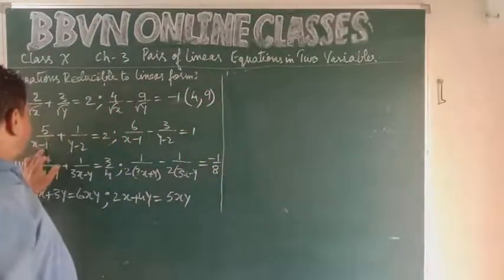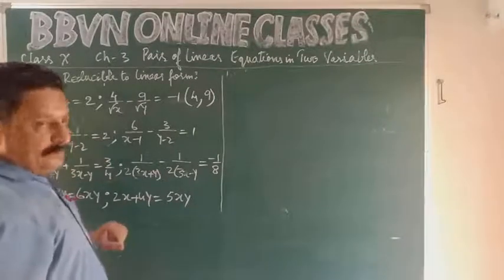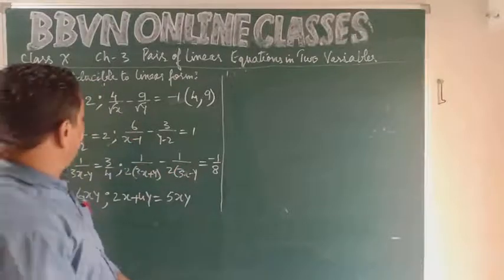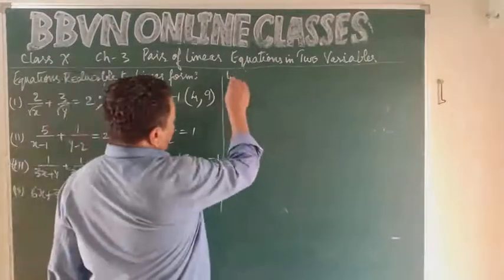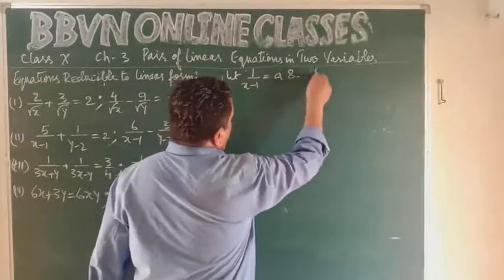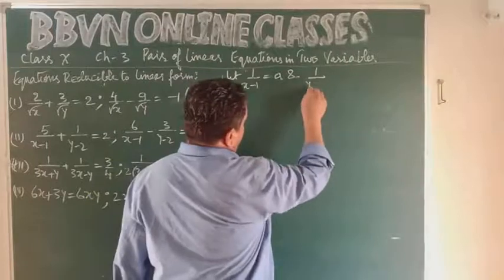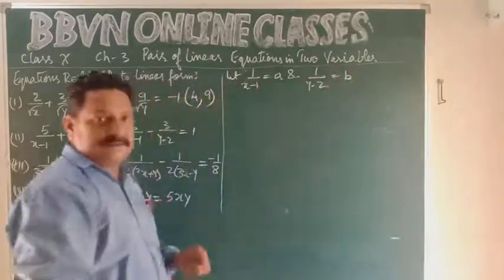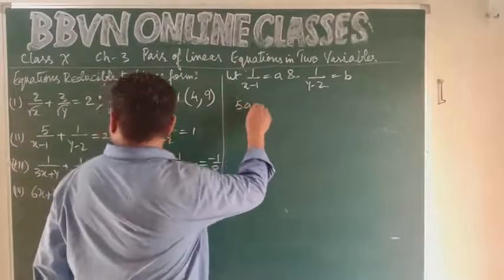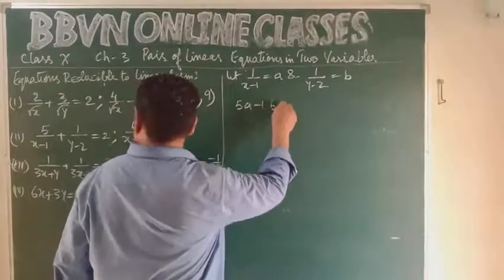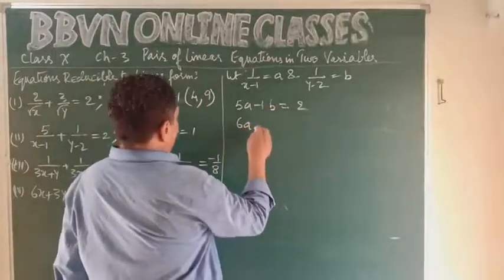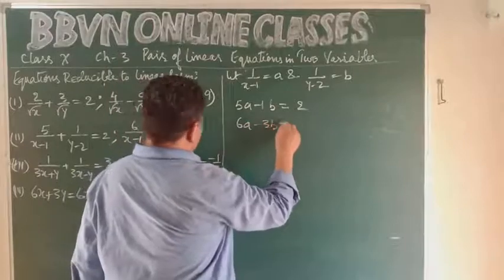Second problem: 5/(x-1) + 1/(y-2) = 2 and 6/(x-1) - 3/(y-2) = 1. Here we let 1/(x-1) = A and 1/(y-2) = B, then substitute. The system becomes: 5A + B = 2 and 6A - 3B = 1.